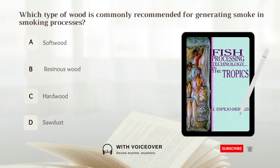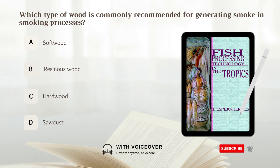Which type of wood is commonly recommended for generating smoke in smoking processes? A. Softwood. B. Resinous wood. C. Hardwood. D. Sawdust. Answer: C. Hardwood.